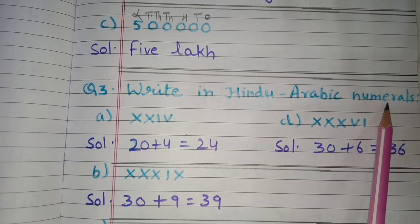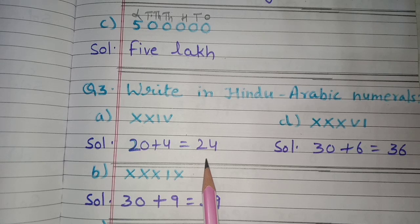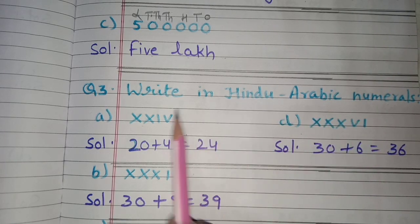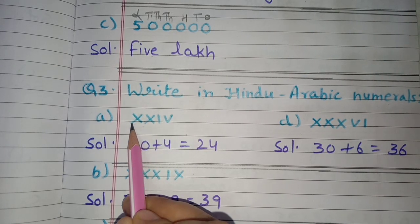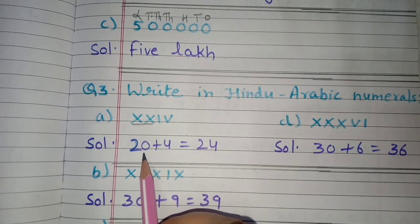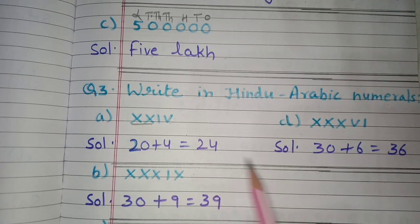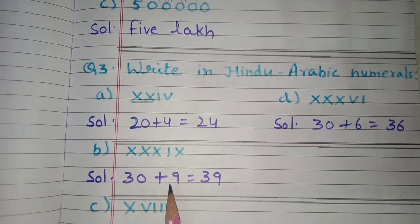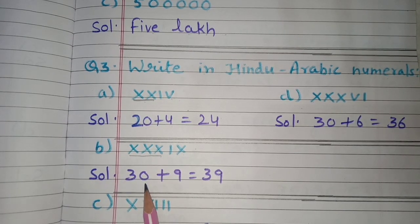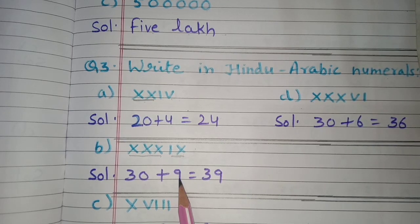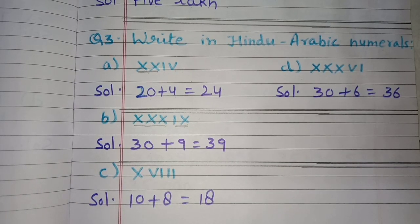Next is question number three: write in Hindu-Arabic numerals. Roman numerals are given and we need to convert them. Part A is XXIV: X means 10, so XX is 20, and IV stands for 4, giving 20 plus 4 equals 24. Part B is XXXIX: three times X is 30, and IX means 9, so 30 plus 9 equals 39.